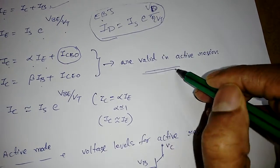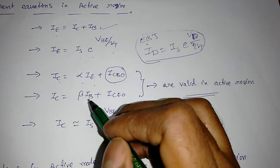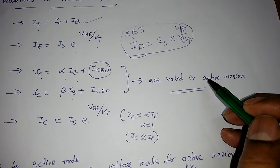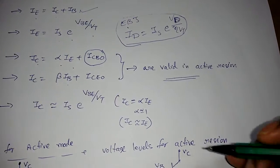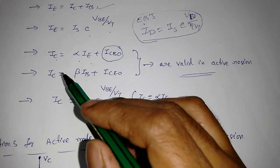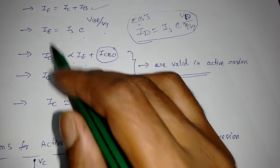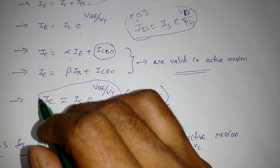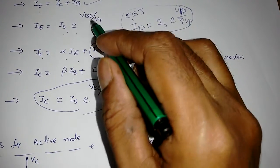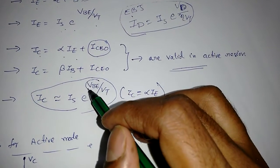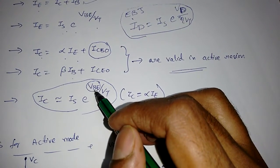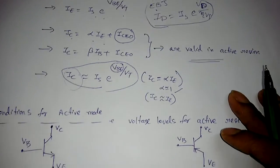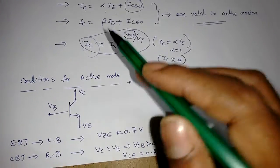These two equations — IC = α·IE and IC = β·IB — are valid in the active region only, because amplification occurs there. Since α ≈ 1, we can write IC ≈ IS · e^(VBE/VT). This means a small change in the base-to-emitter voltage gives a large change in the collector current.